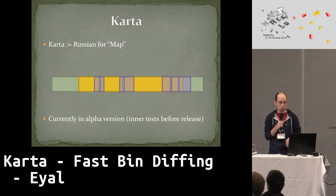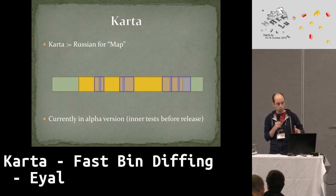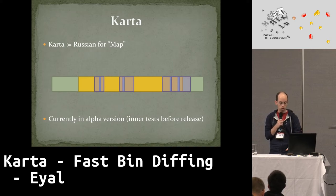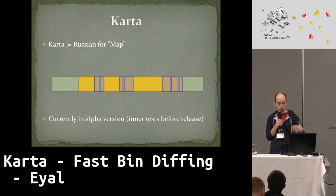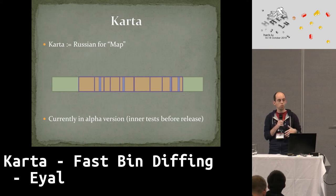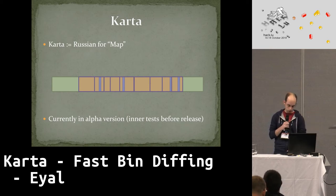After we have found representatives, we need to find the borders of the files. We have graph representatives of several files, and it gets better and better as we match and compare additional functions. Looking at several files, we find the exact borders, find additional files, and once we match all of the files, we know where the library is and what are the functions.